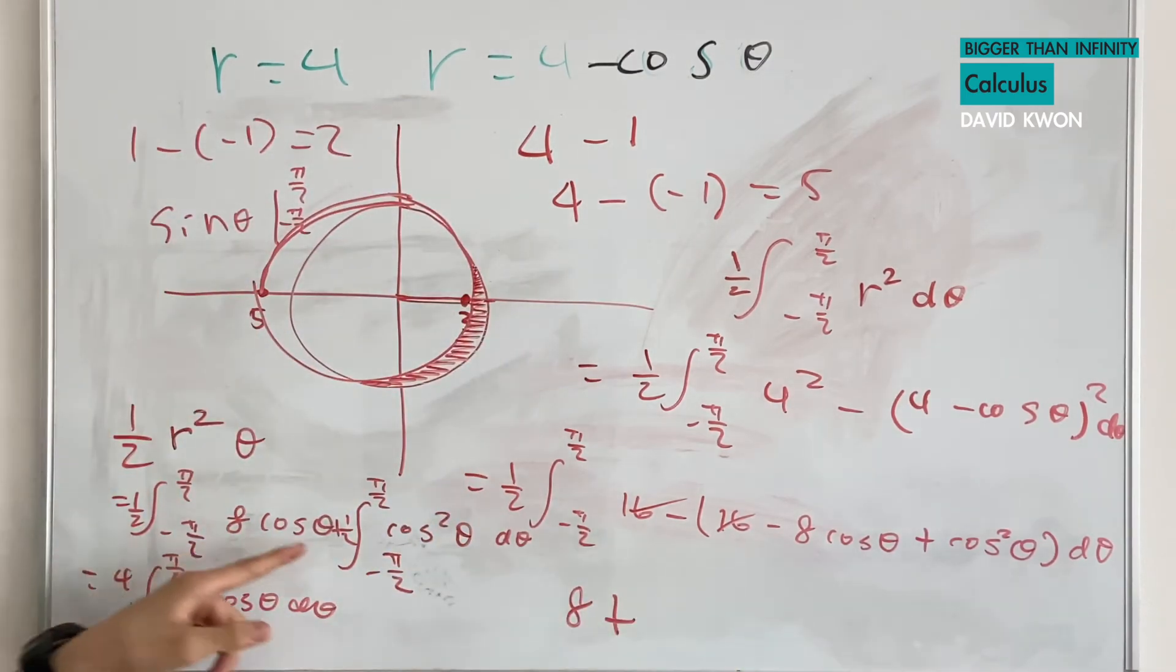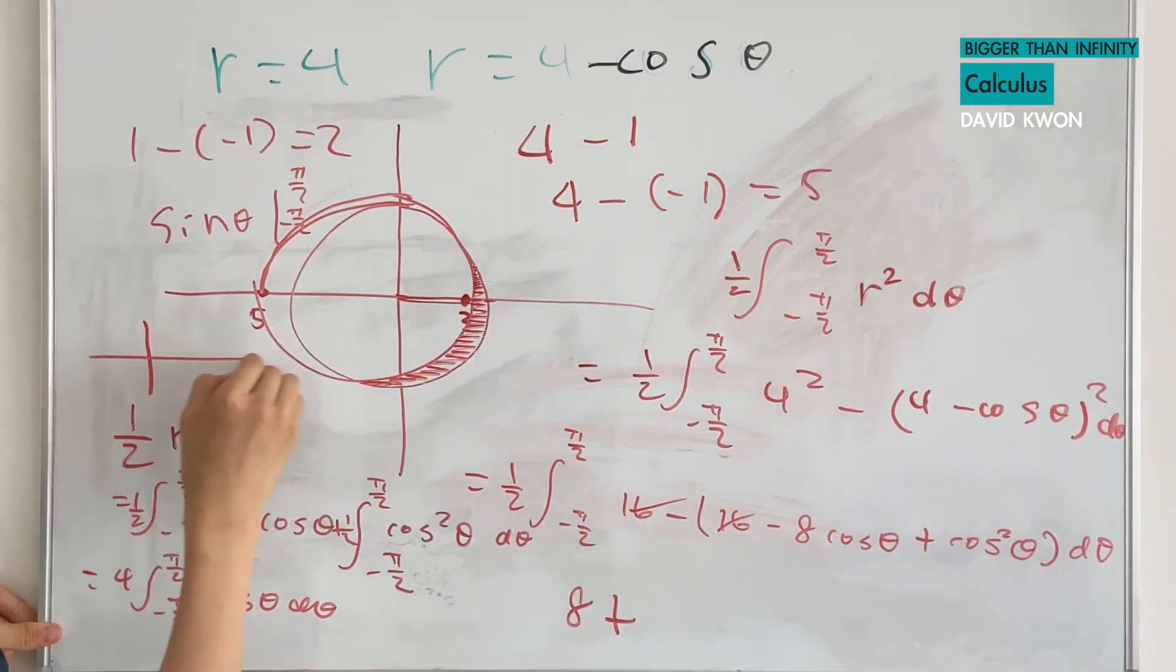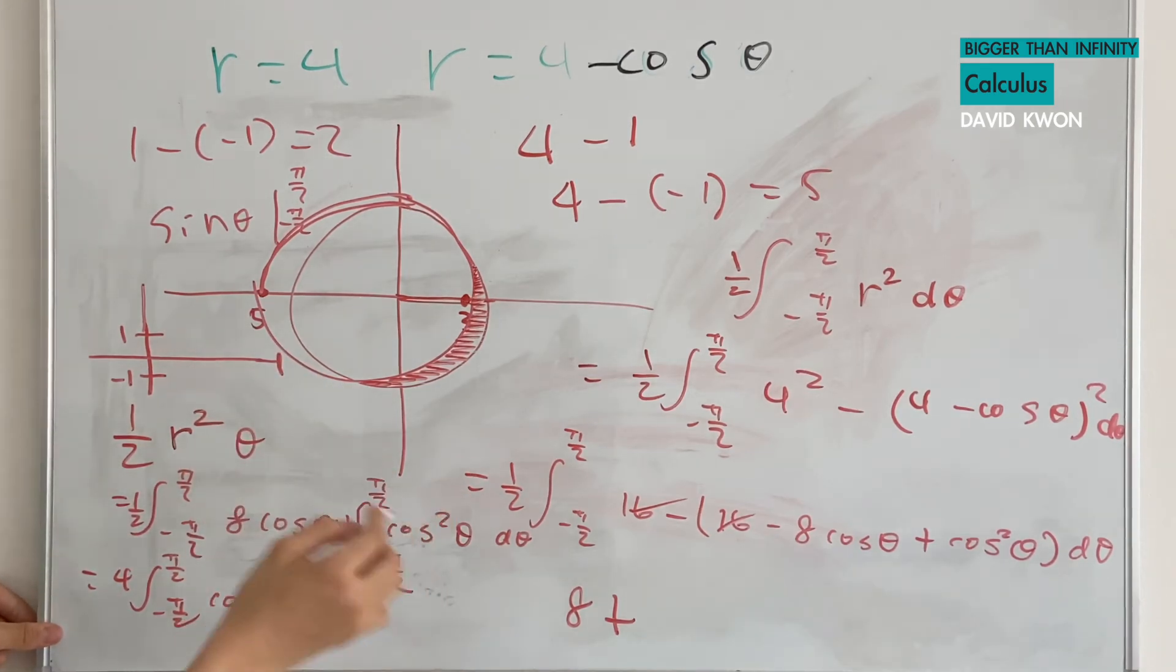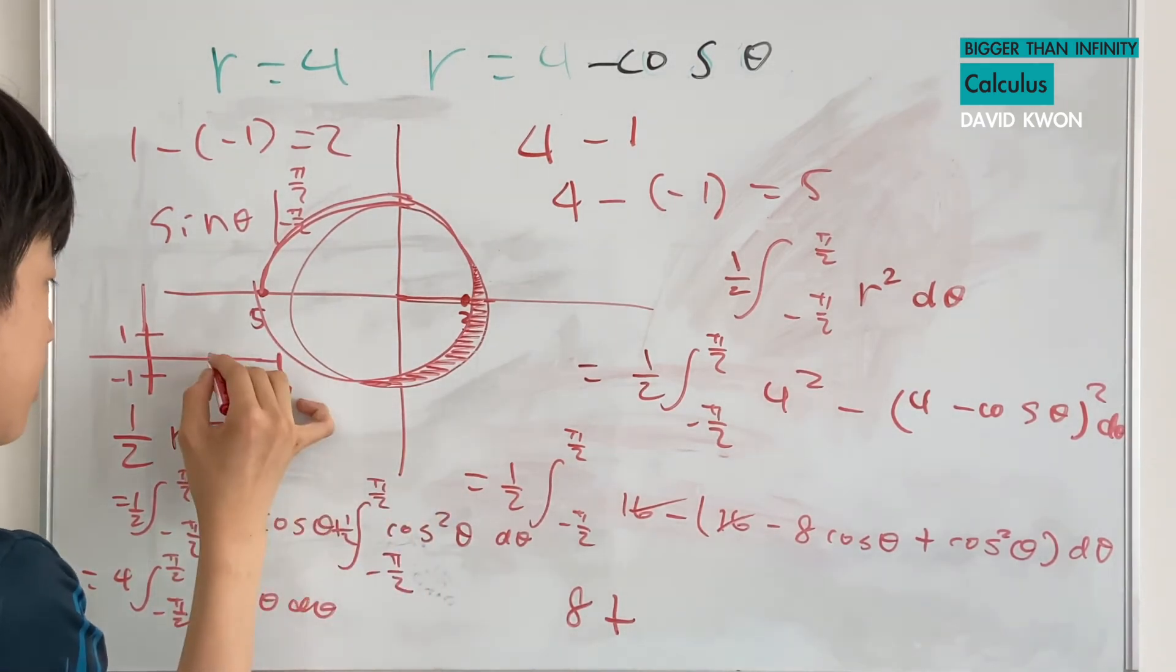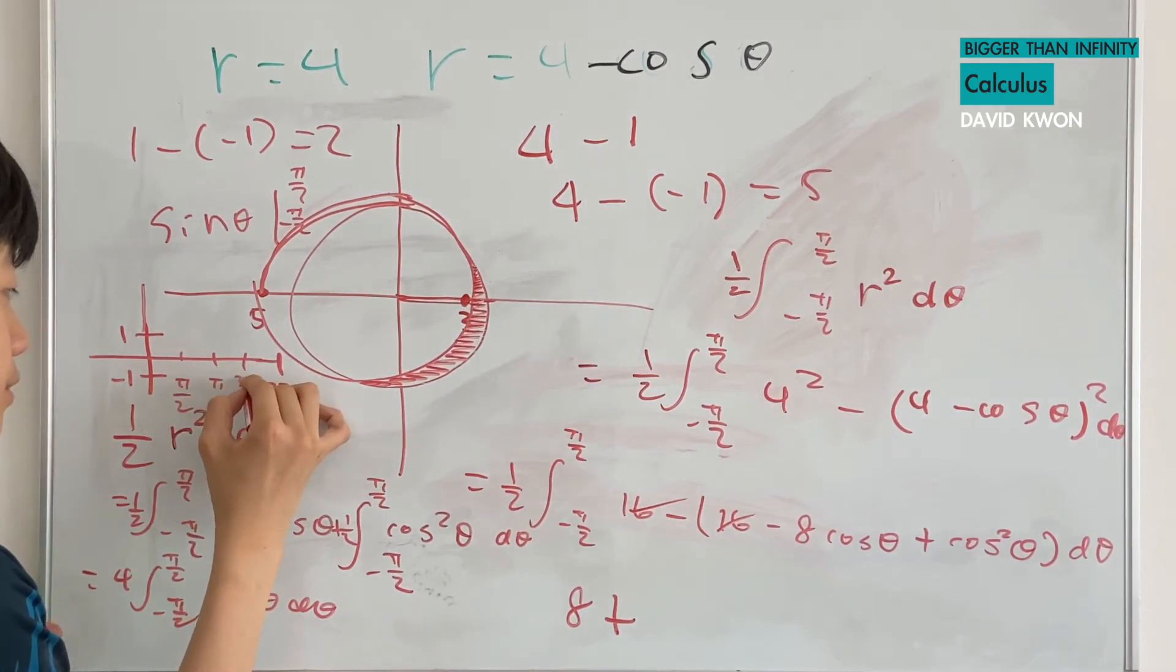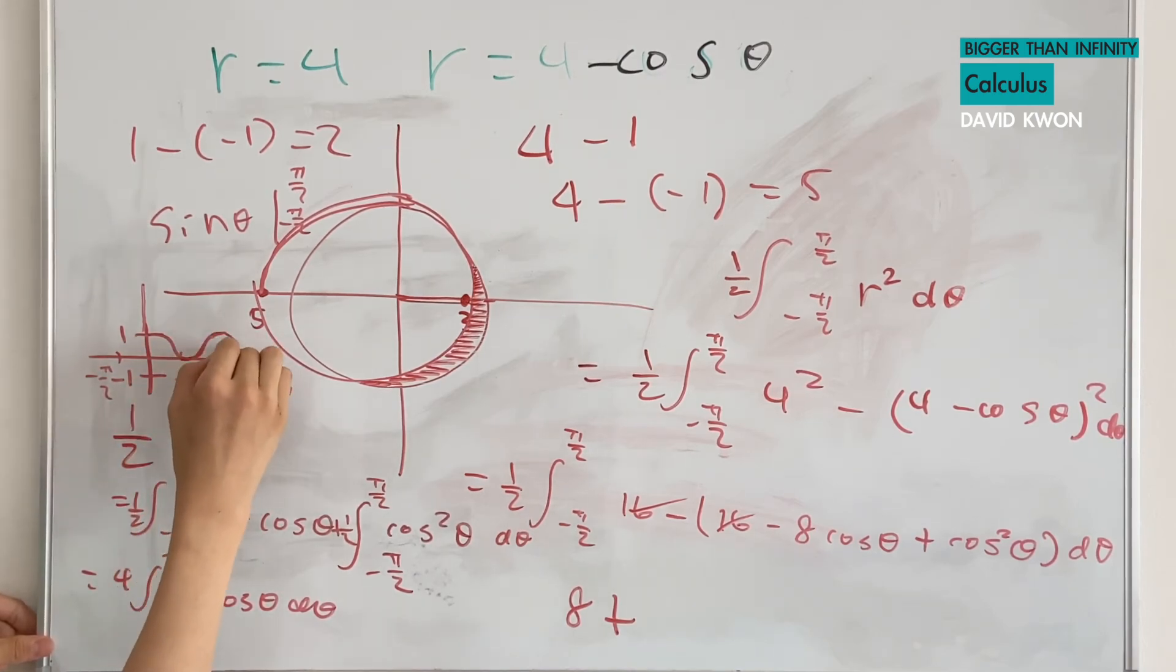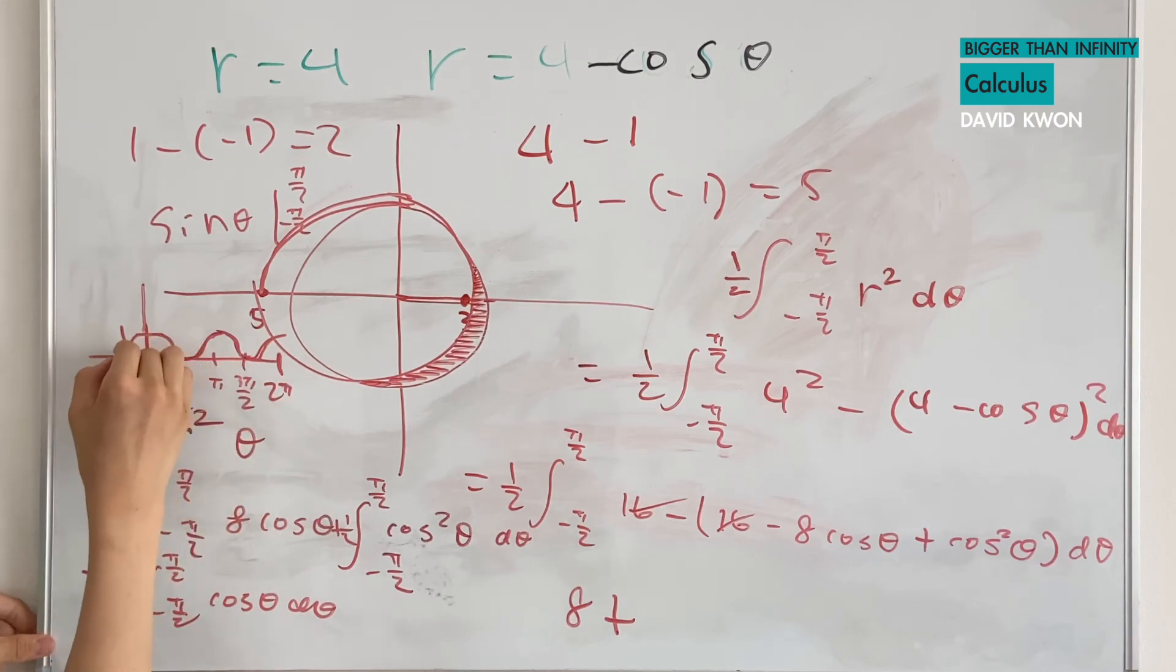Plus now the integral from negative pi over 2 to pi over 2 of cosine squared theta d theta times 1 over 2. This is going to be pi over 2, 3 pi over 2, and negative pi over 2. And it looks like this.